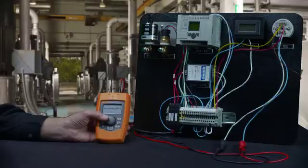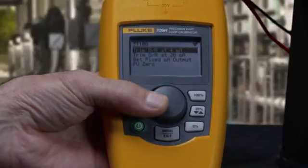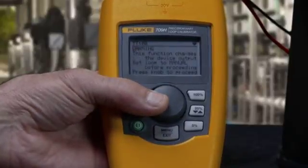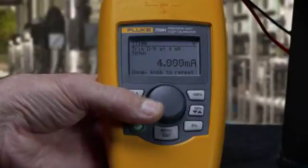Being able to perform the milliamp trim with the loop calibrator is a very powerful feature. This trim function allows you to easily adjust the 4 and 20 milliamp output. Let's walk through both a 4 and 20 milliamp adjustment.